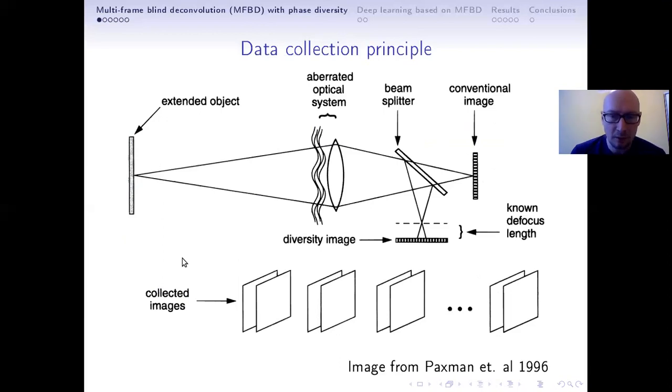So here is a picture taken from Paxman et al 1996, which shows the principle of how data is collected. We have an extended object, in our case a certain region in the solar atmosphere. From this distant object, the light rays pass through turbulent atmosphere and aberrated optical system. Then we have a beam splitter so that two images are formed. One is this conventional imaging focus and the other one is in defocus. This way, we can gather more data and regularize the problem.